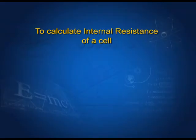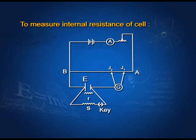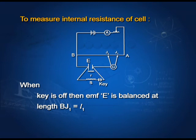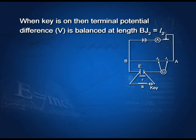There is another experiment used to calculate the internal resistance of a cell using a potentiometer. The cell whose internal resistance is to be measured is connected with the positive terminal at point B of the potentiometer, and a series resistance S is connected with the key. When the key is off, the EMF is balanced at length BJ1 = L1, so E = KL1. When the key is on, the terminal potential difference V is balanced at length BJ2 = L2, so V = KL2.